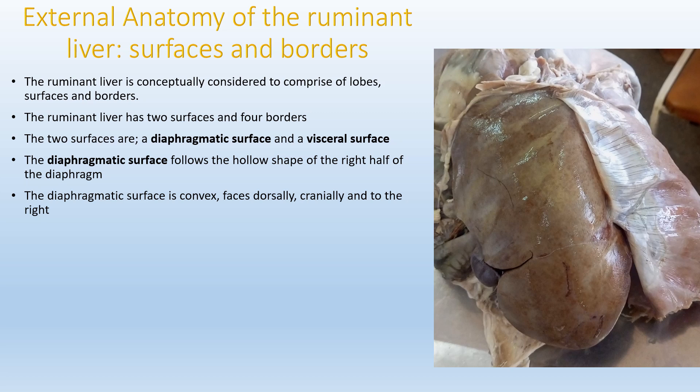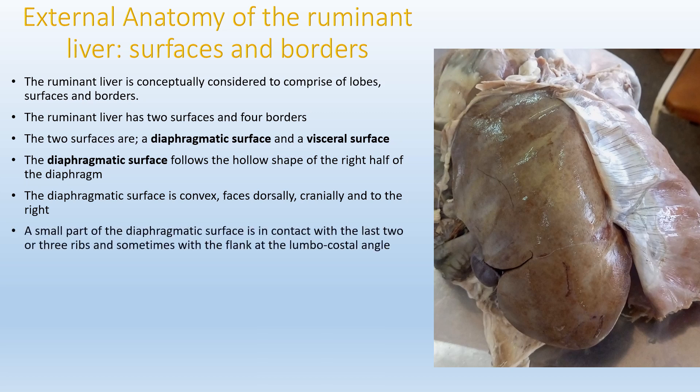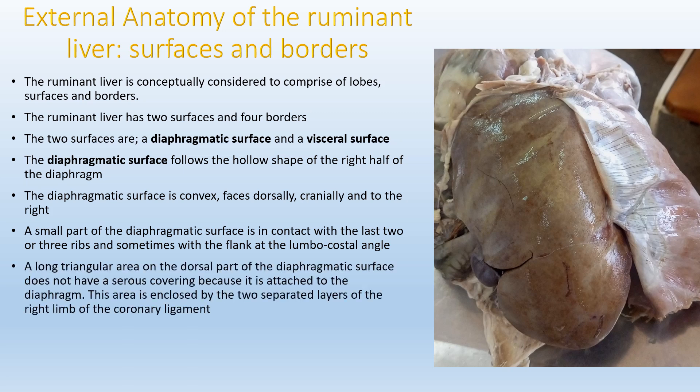The diaphragmatic surface is convex and it faces dorsally, cranially and to the right of the median plane. A small part of the diaphragmatic surface is in contact with the last two or three ribs and sometimes also with the flank at the lumbocostal angle. There is a long triangular area on the dorsal part of the diaphragmatic surface which does not have a serous covering because it is attached to the diaphragm. This area is enclosed by the two separated layers of the right limb of the coronary ligament, which is one of the ligaments that attaches the liver to the diaphragm.